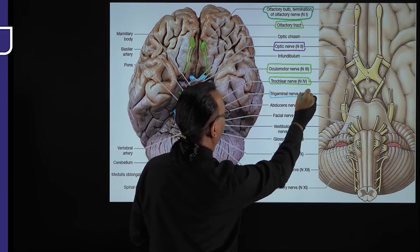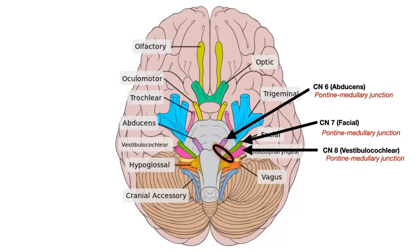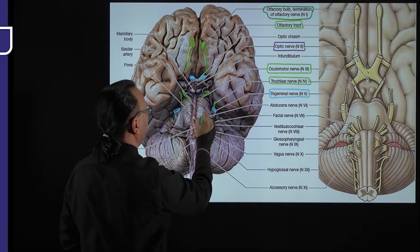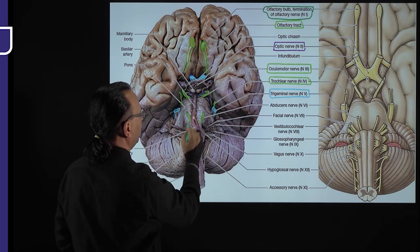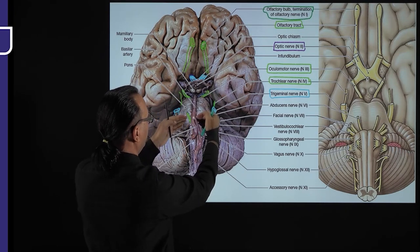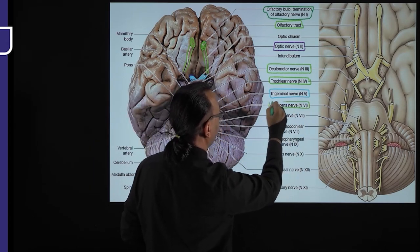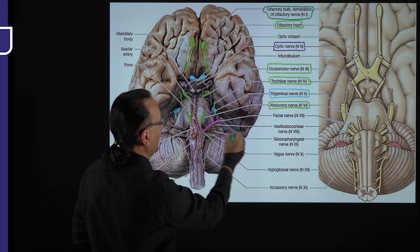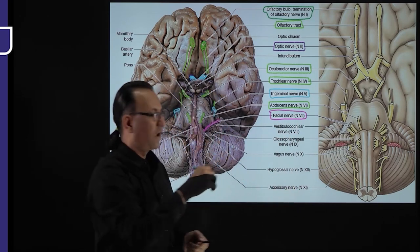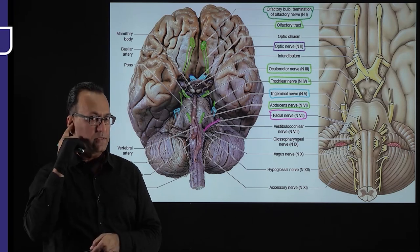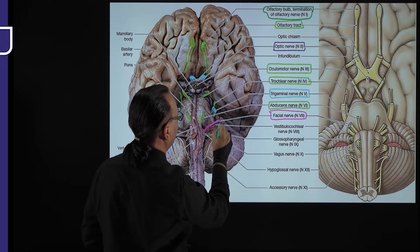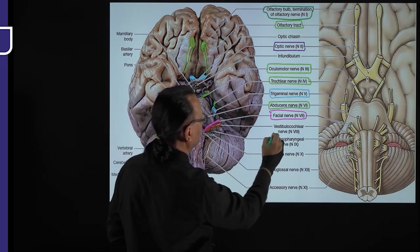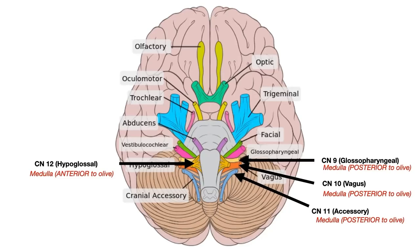Cranial nerves 6, 7, and 8 are at the pontomedullary junction. Nerve 6, the abducent nerve, is the most medial and is evident on both sides. Above is the pons; below is the medulla oblongata. Nerve 7, the facial nerve, is lateral to nerve 6, also at the pontomedullary junction. Still lateral is the vestibulocochlear nerve, cranial nerve 8, for hearing and balance, again at the pontomedullary junction.